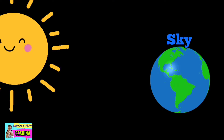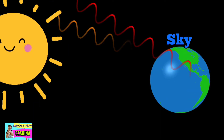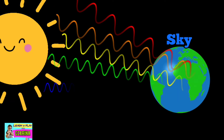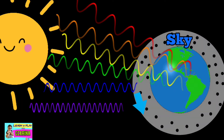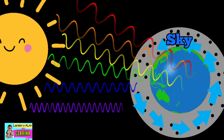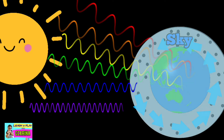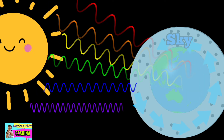The white light from the sun has seven different colors, and each color has its own wave: red wave, orange wave, yellow wave, green wave, blue wave, and violet wave. See how the blue waves bounce in the particle to make the sky blue? The blue waves get scattered in the sky — now you see a blue sky.